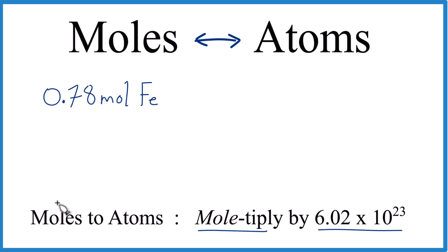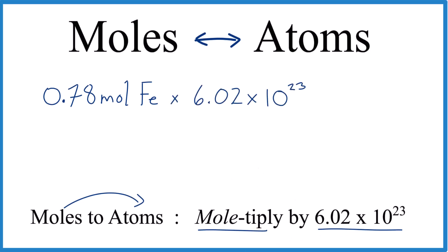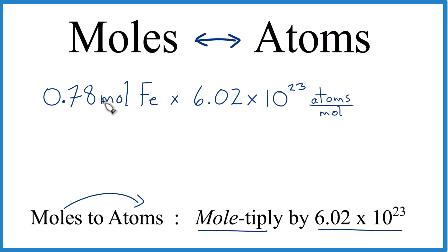So we've got moles, we're going to atoms. We're going to multiply by Avogadro's number, like this. And remember, that's atoms per mole. We multiply. Moles on top and the bottom, they cancel out. We're left with atoms. And we end up with 4.7. And we can just add the times 10 to the 23rd there on the end. And we have atoms.